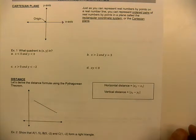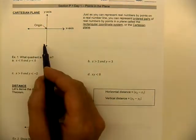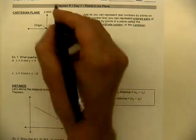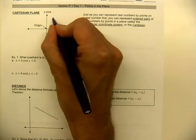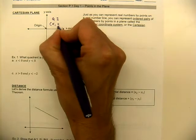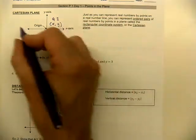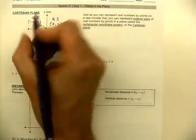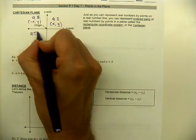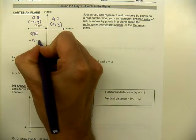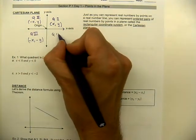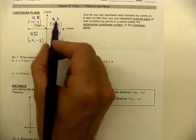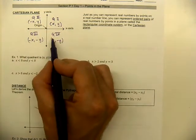To get started with ordered pairs in the Cartesian plane, we're describing both a horizontal and vertical placement. In quadrant one, points have both positive X and positive Y coordinates. In quadrant two, negative X and positive Y. In quadrant three, both negative X and negative Y. And in quadrant four, positive X and negative Y.